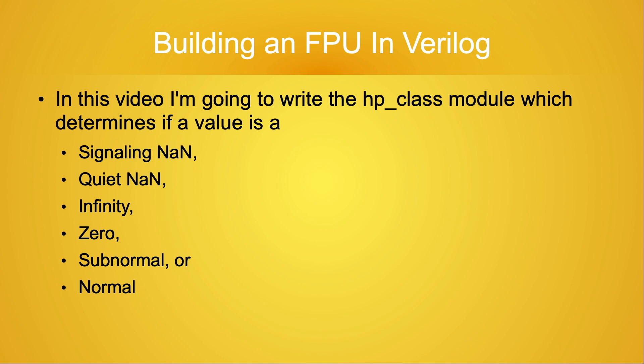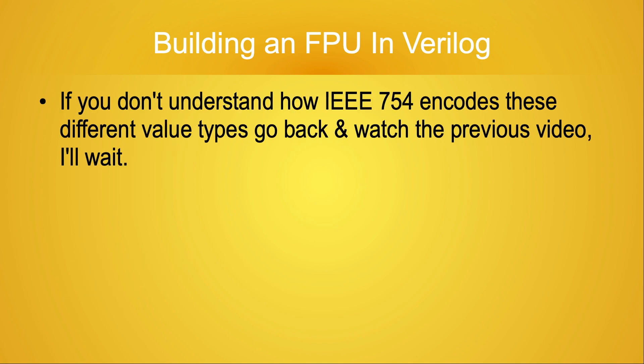Each of these return values is encoded as a single bit. The module will determine which of these six categories the value falls into, set the corresponding return value to one, and the rest of the return values to zero. If you don't know how the IEEE standard categorizes these value types, you need to go back and watch the previous video. I'll wait — no really, I'm in no hurry, and you need to have that information before the rest of this video will make sense.